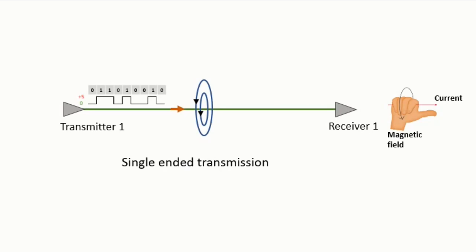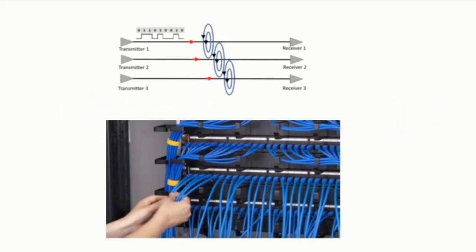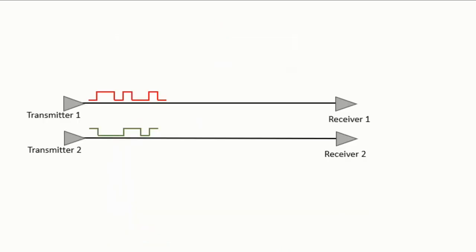Now in practice we have many conductors near each other that transmit data simultaneously, and the electromagnetic field created by each wire becomes a problem. The problem is that the electromagnetic field emanating from each conductor will affect the data transmitted in the other conductors.